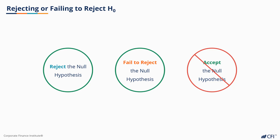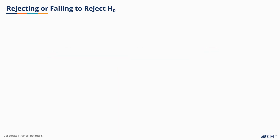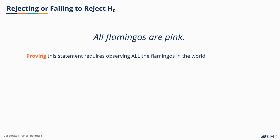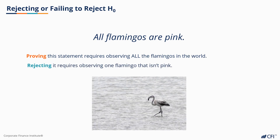The trick here is that it's easier to show a statement to be false than prove it true. For example, consider the statement: all flamingos are pink. To prove this, we'd need to examine all flamingos in the world. However, if we observe just one black flamingo, we can reject the statement that all flamingos are pink.